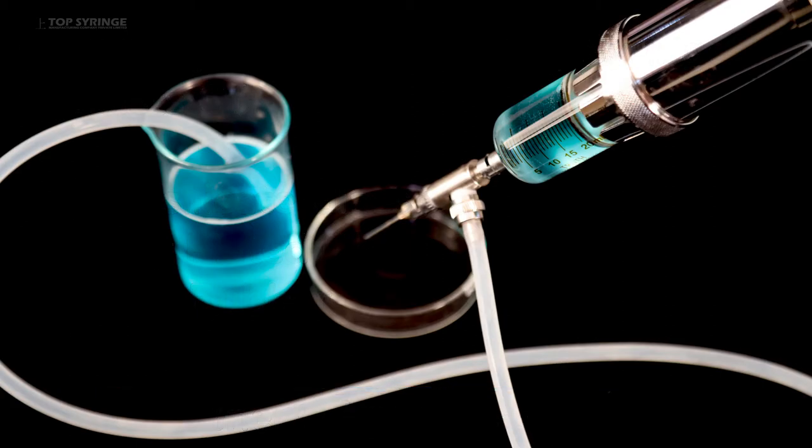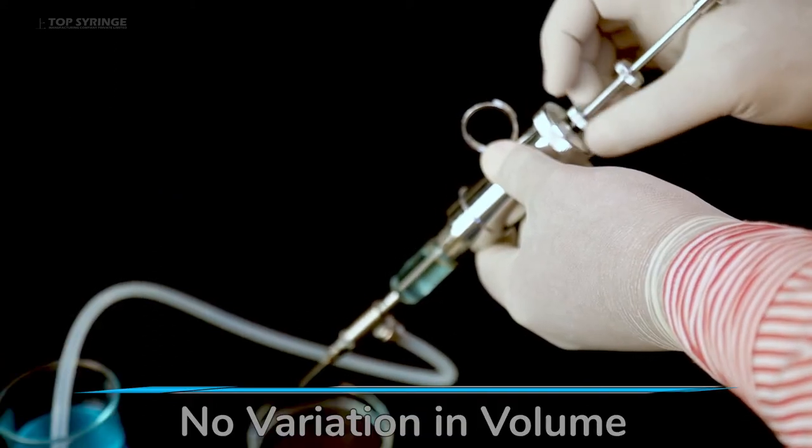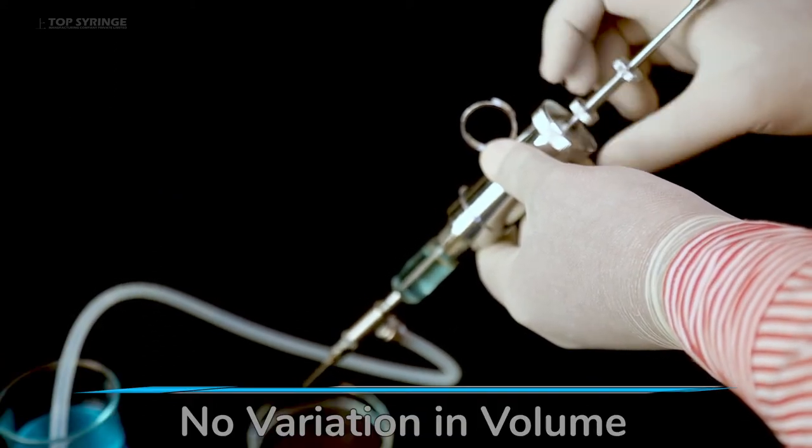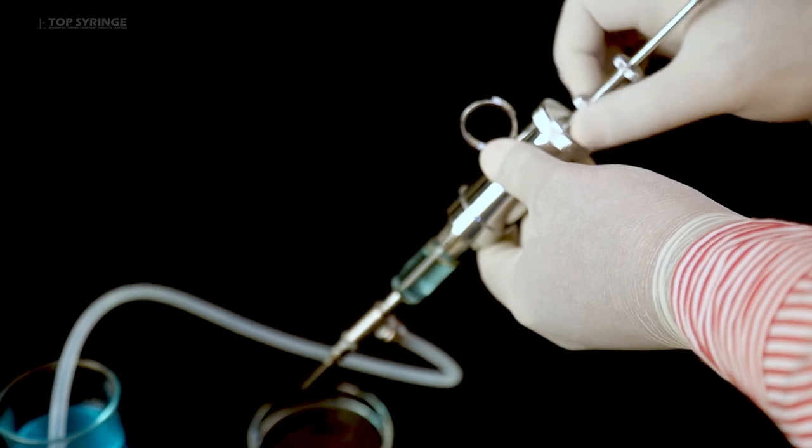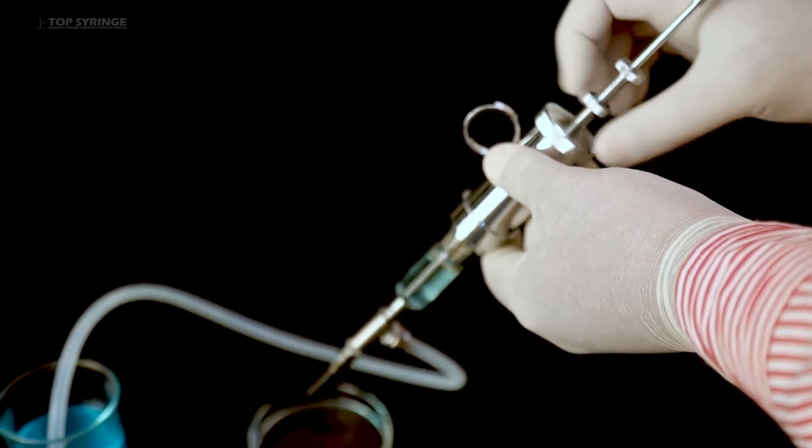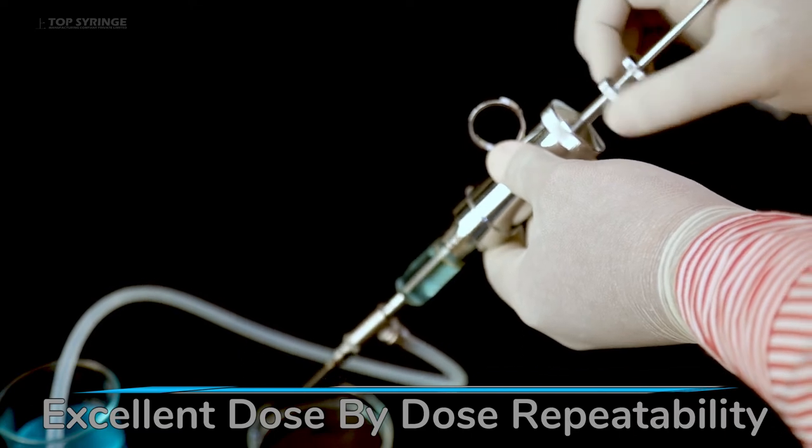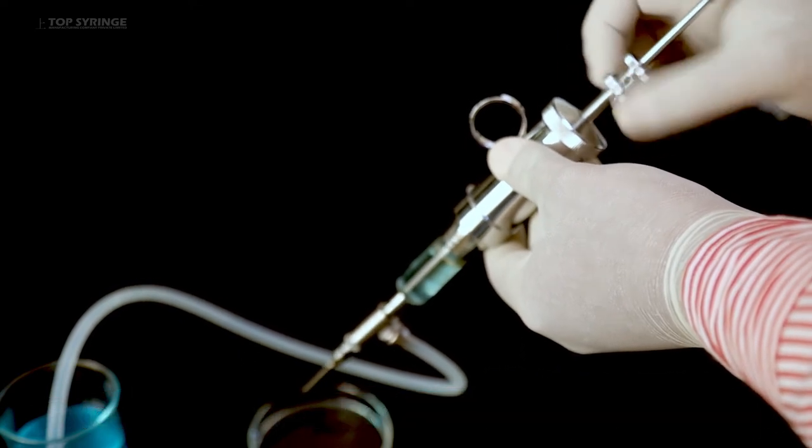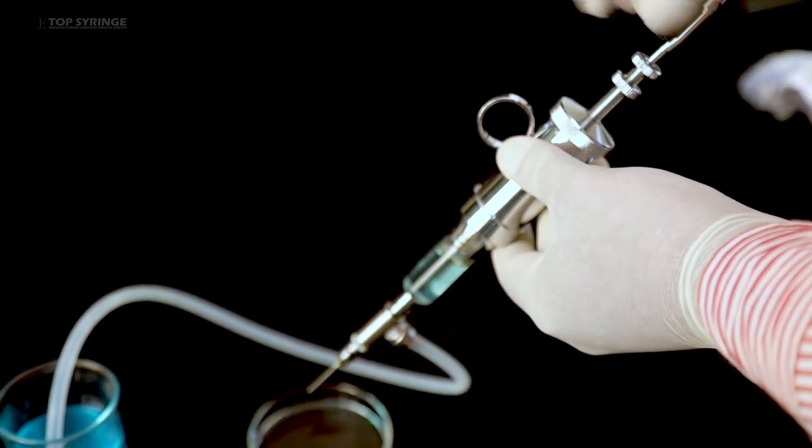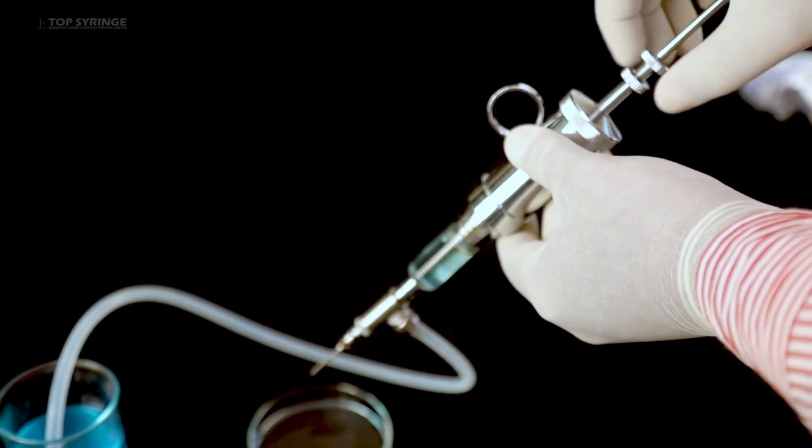The volume can be set quickly. Unlock the safety locking nut and turn the micrometer screw until the plunger edge reaches the appropriate position on the barrel graduation. Tighten the locking nut. The volume will not vary while activating the syringe, providing excellent dose-by-dose repeatability.